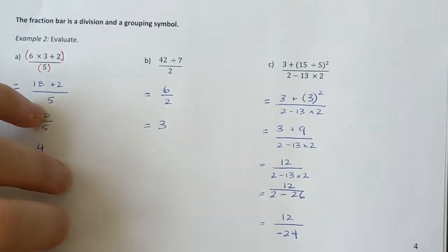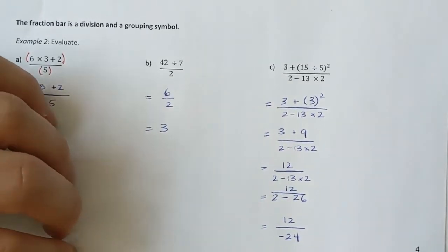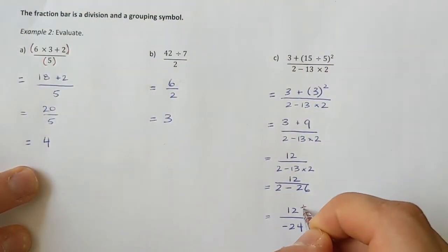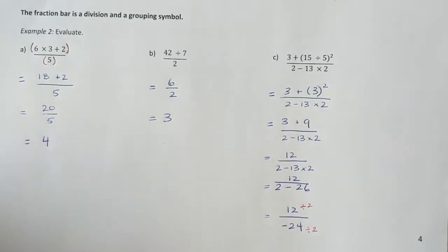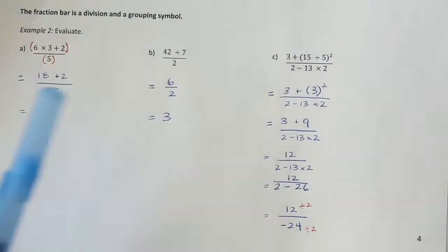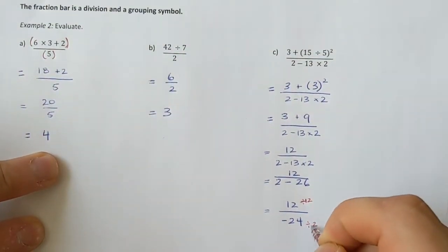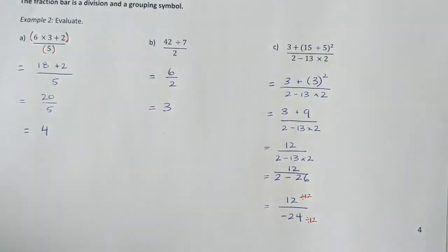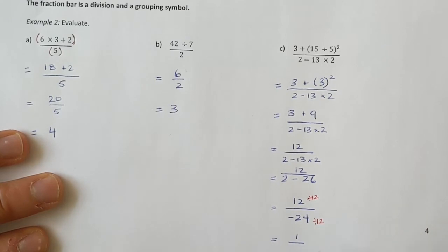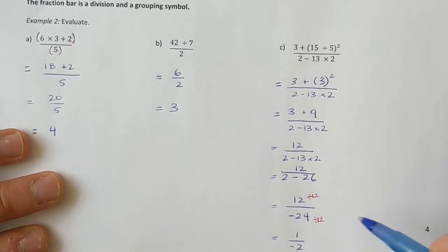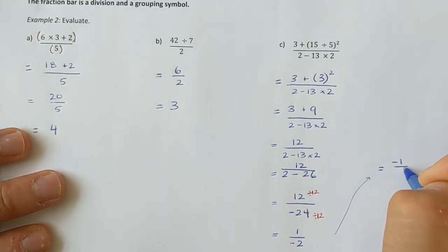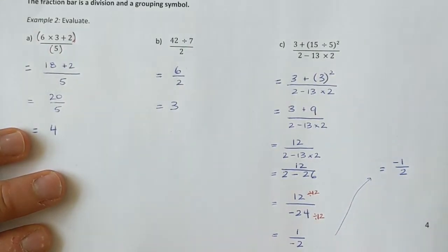I have 12 over negative 24. I can reduce that because 12 and 24 can both be divided by 12. 12 divided by 12 is 1, and negative 24 divided by 12 is negative 2. For my final answer I bring the negative up to the numerator, giving negative one half.